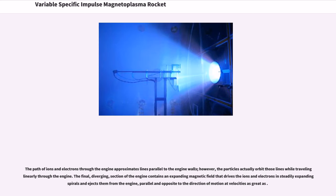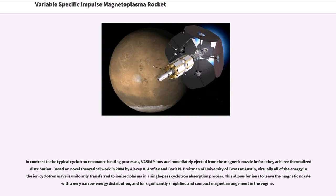The path of ions and electrons through the engine approximates lines parallel to the engine walls; however, the particles actually orbit those lines while traveling linearly through the engine. The final, diverging section of the engine contains an expanding magnetic field that drives the ions and electrons in steadily expanding spirals and ejects them from the engine, parallel and opposite to the direction of motion at high velocities.